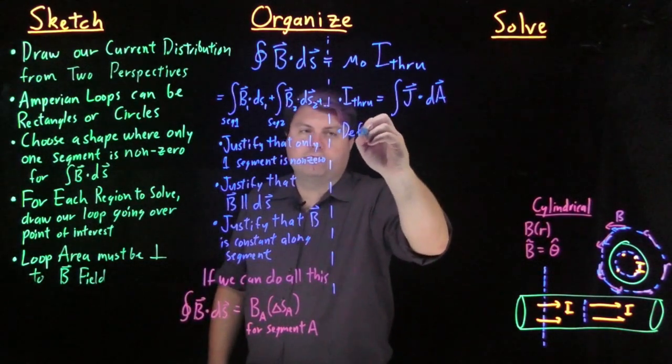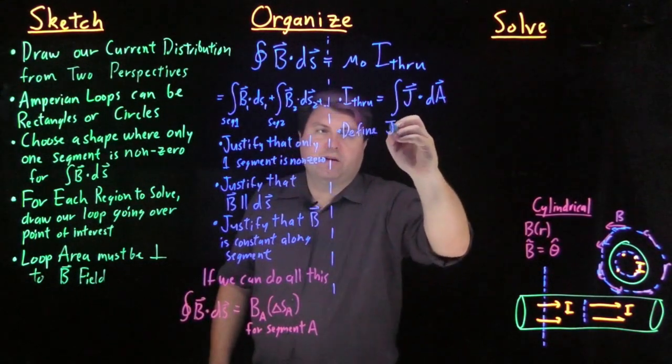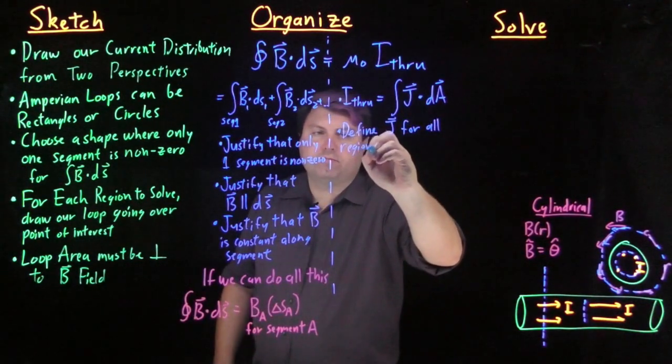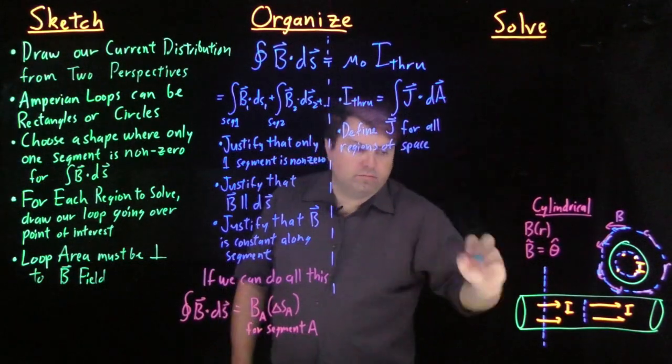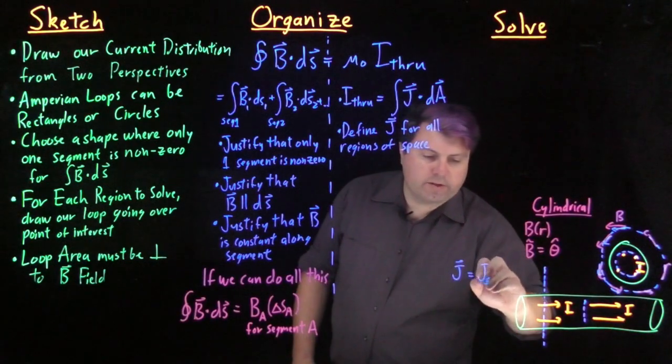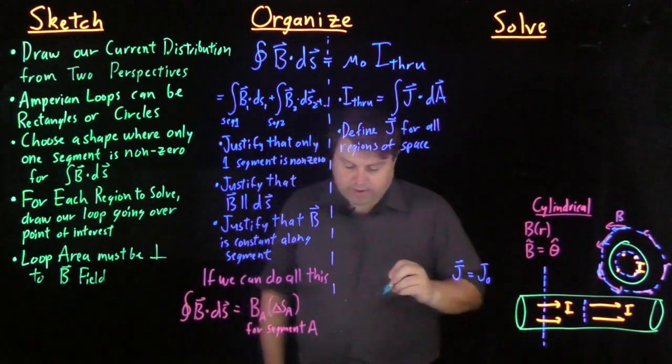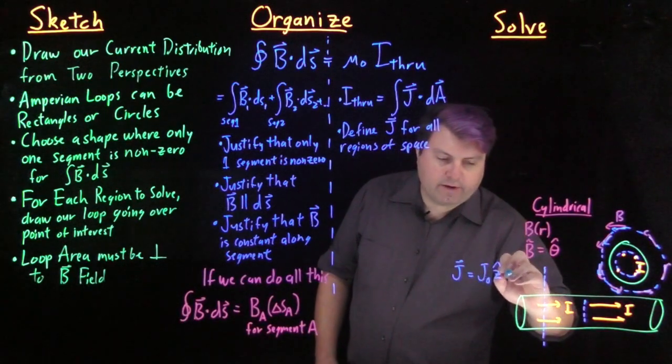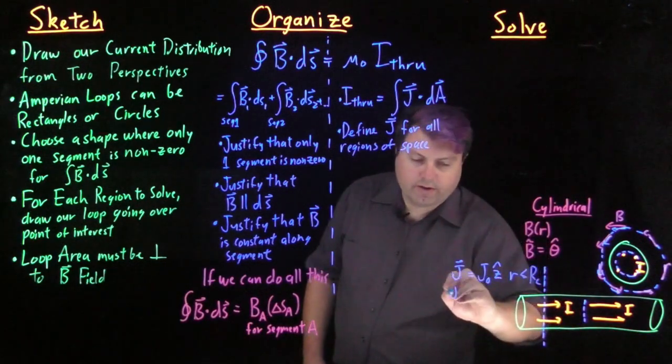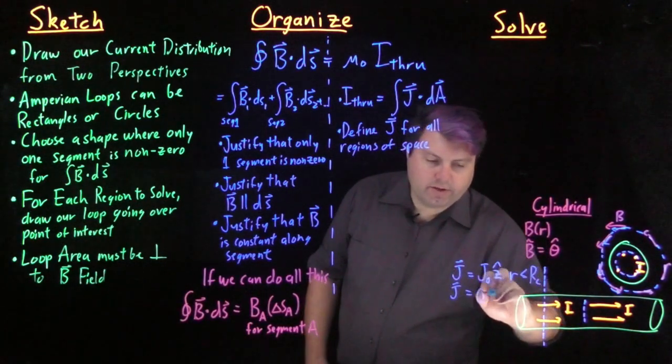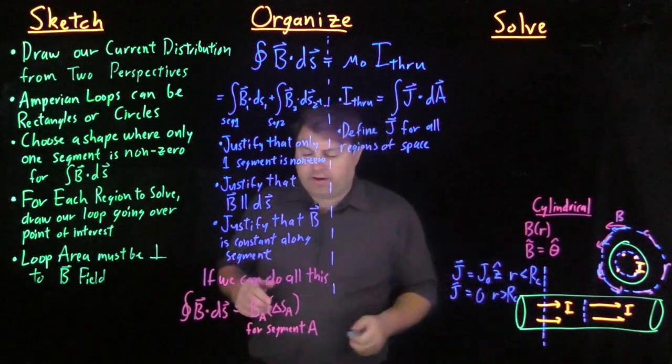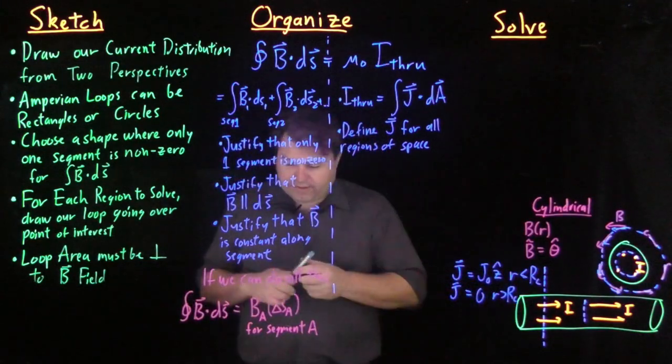So we want to define J for all regions of space. In this case, our J would be equal to some J constant in our z hat direction for r less than the radius of the cylinder, and then our J is equal to zero for r greater than the radius of the cylinder. So it could be just as simple as that. If we have a constant density wire, that's all we have to do.